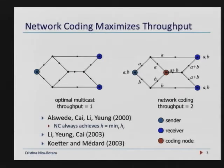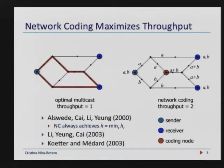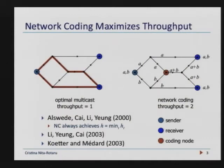For example, you can really get better throughput. Looking at the two diagrams on the page, on the left — the butterfly network — no matter what you do for multicast, your throughput is always going to be one because of the bottleneck link. However, with network coding, routers are allowed to send linear combinations of received packets. On the bottleneck, I can send A XOR B — one message containing information about both A and B — and the two recipients can recover both packets A and B.